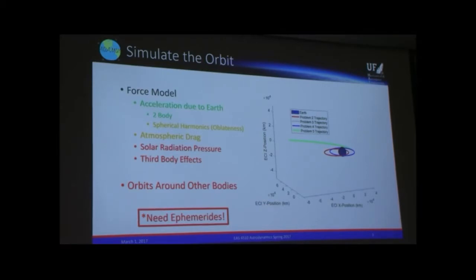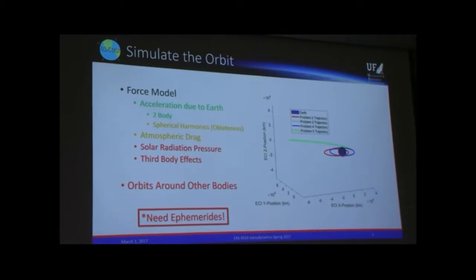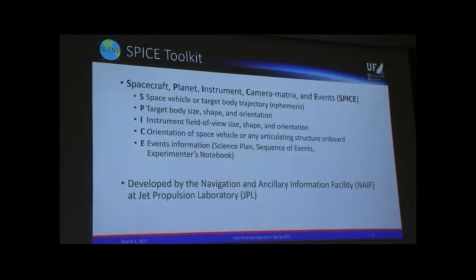That's why we start using tools like the SPICE toolkit — because you're going to need things like the ephemerides, which are basically position information for the celestial bodies. You'll need that for solar radiation pressure because you need to know where the Sun is with respect to your satellite at all times if you want to model the incoming photons. For third-body effects you want to know where the Sun or Moon is pulling you — it's not always going to be radially out, so you have to model that intelligently.